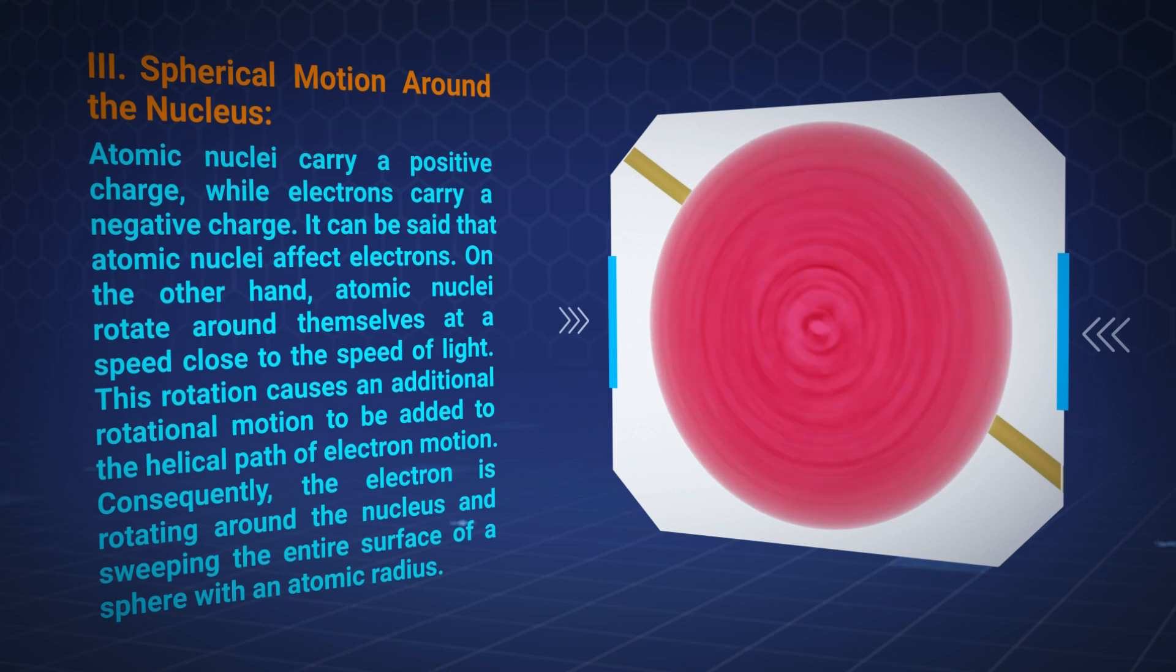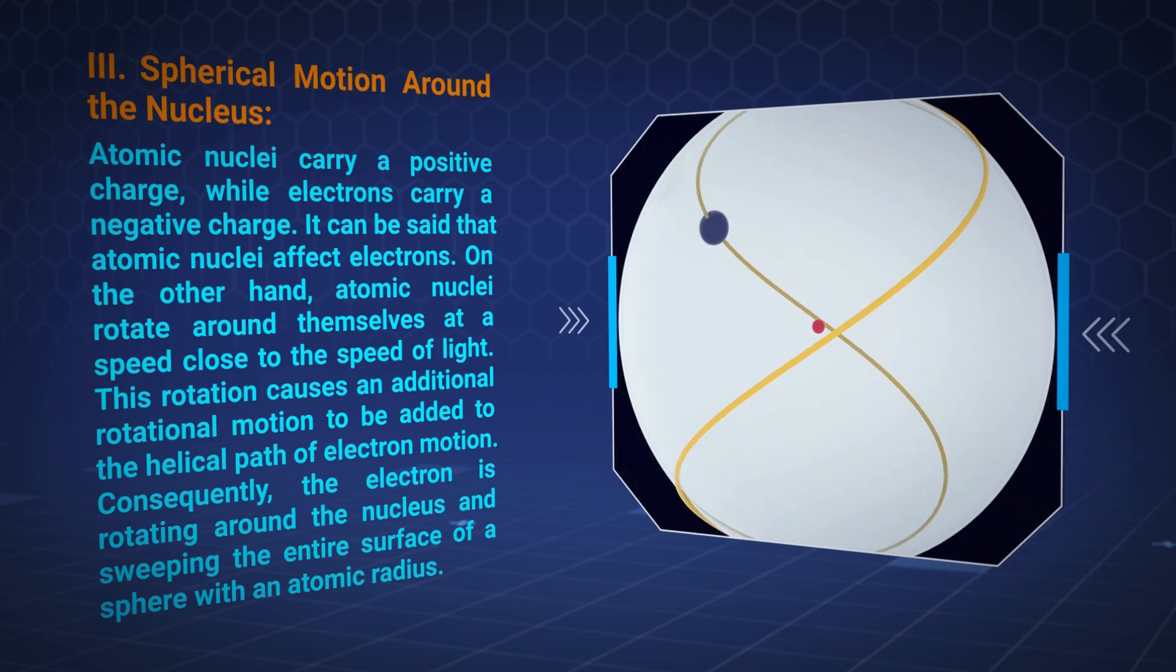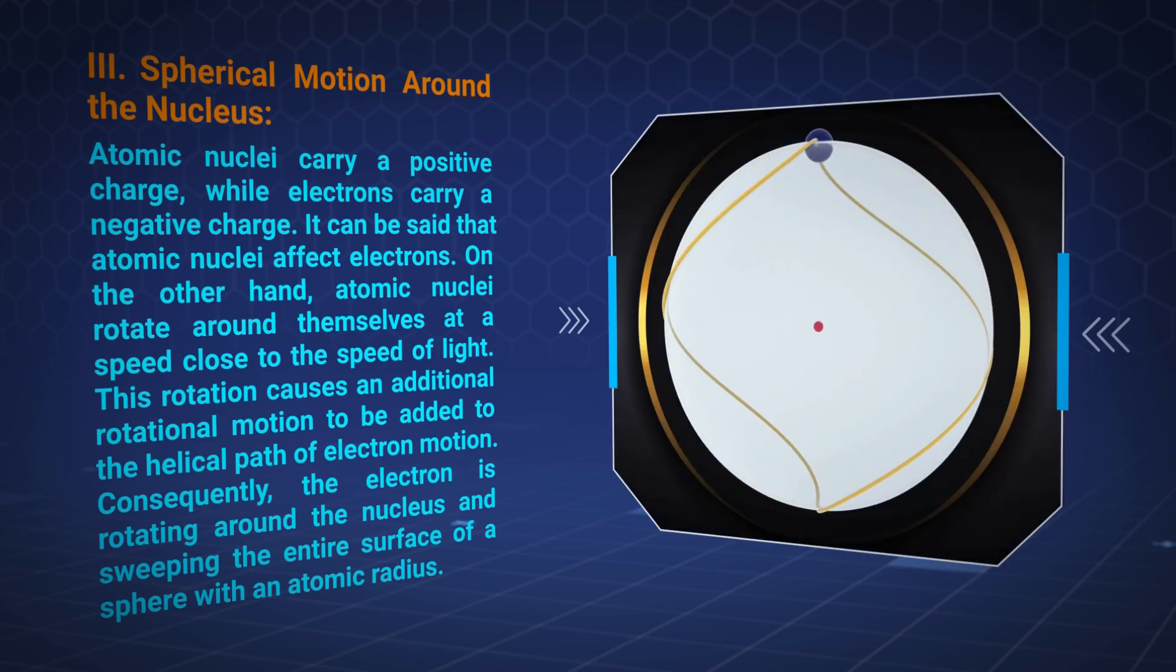This rotation causes an additional rotational motion to be added to the helical path of electron motion. Consequently, the electron is rotating around the nucleus and sweeping the entire surface of a sphere with an atomic radius.